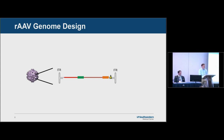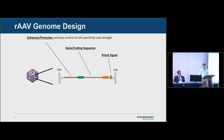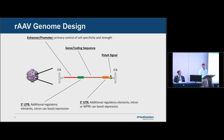For recombinant AAV genome design, the creativity is that you can put in any DNA that will fit. Traditionally, if you're trying to express a gene, you have your enhancer and promoter for primary control of cell specificity and strength, your gene coding sequence, and poly A — that's your basic transcription unit. But you can get more creative: modifying the 5' UTR and 3' UTR, adding introns which typically boost expression, the woodchuck hepatitis promoter response element (WPRE), different microRNA binding sites — whatever you can design to control expression.